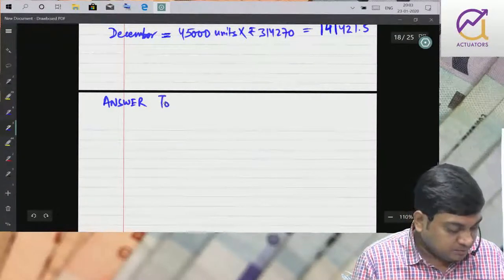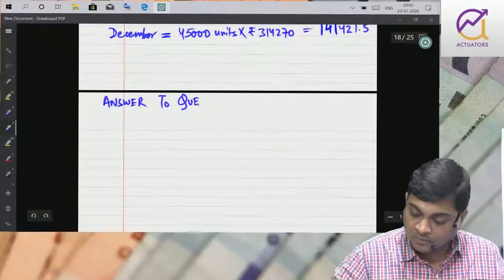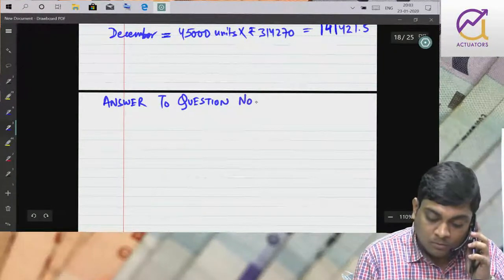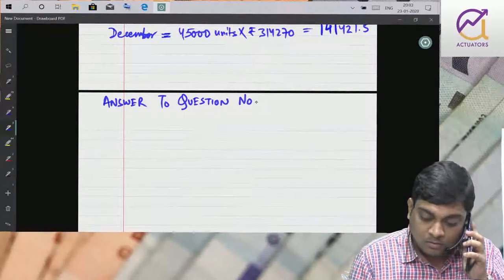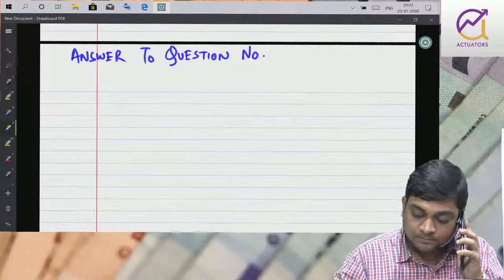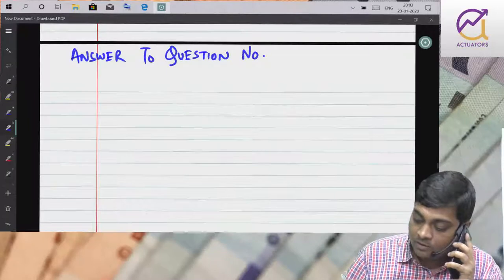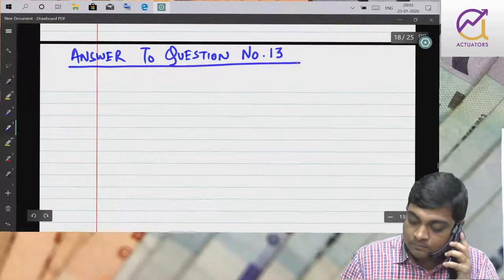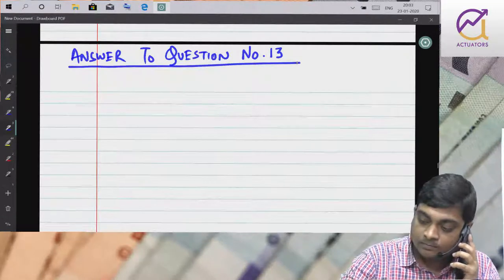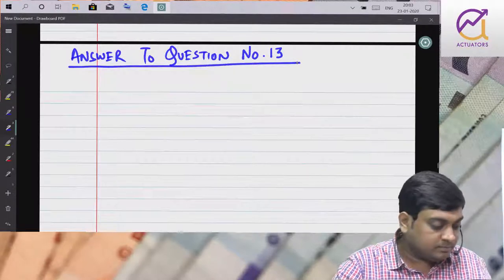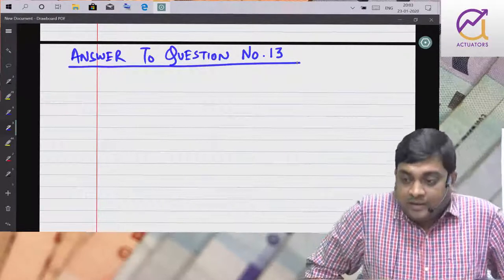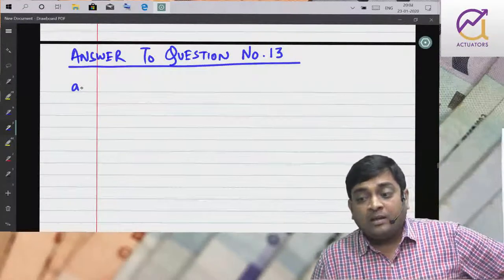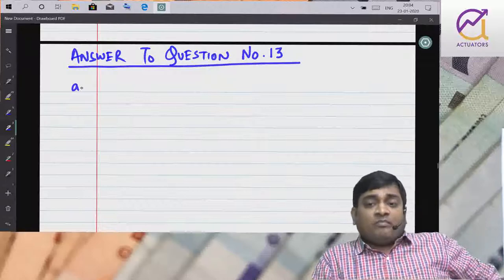Now, answer to question number 13. The first question is differences between cost accounting and management accounting. This question we have discussed earlier in some papers and in class, just to discuss: